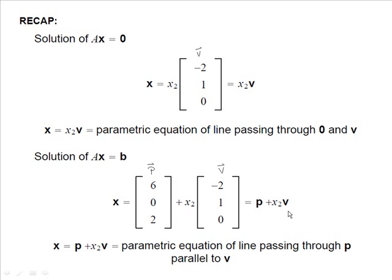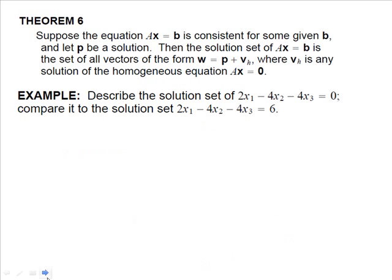When a non-homogeneous linear system has infinitely many solutions, the general solution can be written as one particular vector plus an arbitrary linear combination of vectors that satisfy the corresponding homogeneous system. This is Theorem 6: if Ax = b is consistent with solution p, then the solution set of Ax = b is all vectors of the form w = p + v_h, where v_h is any solution of the homogeneous equation Ax = 0.